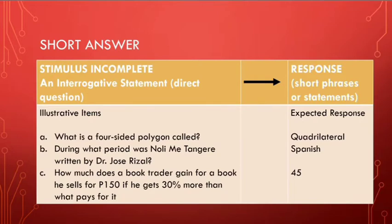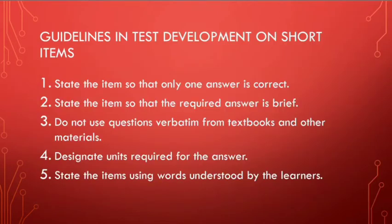To illustrate: 'What is a four-sided polygon called?' — answer: 'quadrilateral.' 'During what period was Noli Me Tangere written by Dr. Jose Rizal?' — answer: 'Spanish period.' 'How much does a book trader gain for a book he sells for 150 pesos if he gets 30 percent more than what he paid for it?' — answer: 45. On your screen is the example stimulus with illustration and possible response.